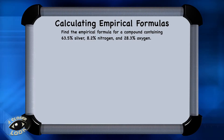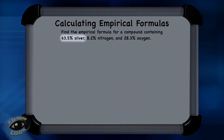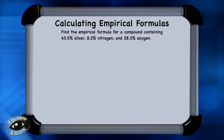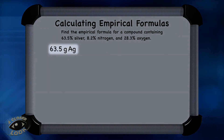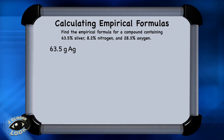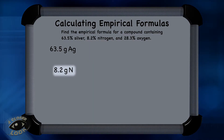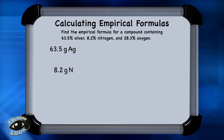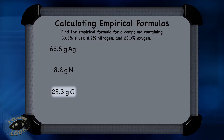Here's an empirical formula practice problem. Find the empirical formula for a compound containing 63.5% silver, 8.2% nitrogen, and 28.3% oxygen. The first step is to change the percentages to grams by assuming 100 grams of the compound. So 63.5% silver becomes 63.5 grams of silver, 8.2% nitrogen becomes 8.2 grams of nitrogen, and 28.3% oxygen becomes 28.3 grams of oxygen.